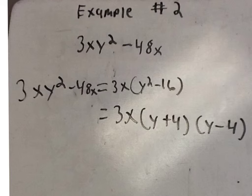Example number 2 of Factoring Polynomials. The example problem is 3xy squared minus 48x. First you would factor out the greatest common factor of 3xy squared minus 48x.